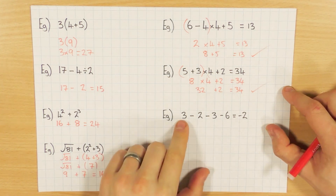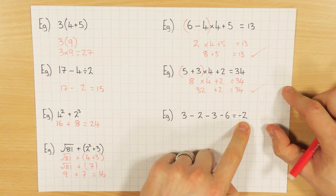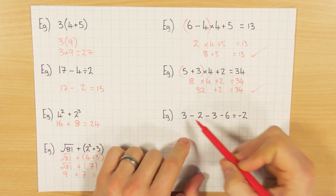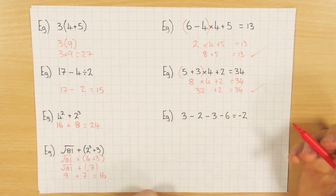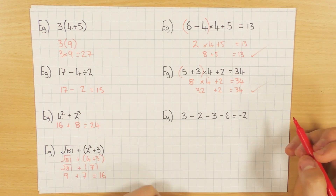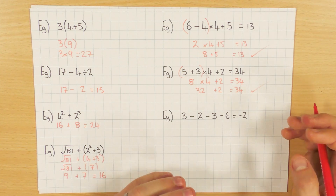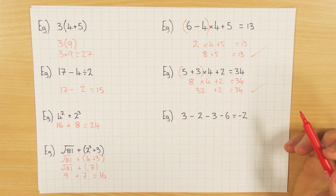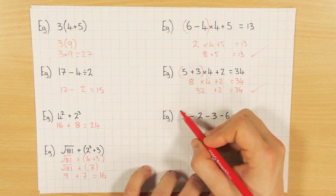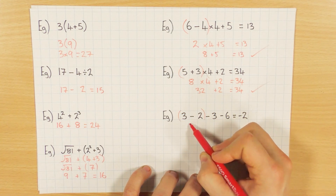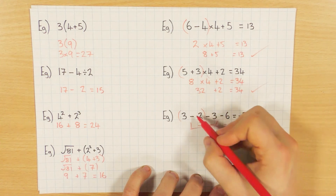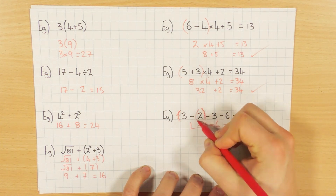The next one: 3 minus 2 minus 3 minus 6, answer needs to be minus 2. Trying brackets at the front: 3 minus 2 is 1, then 1 minus 3 minus 6 gives minus 2 minus 6 — that doesn't work. Trying brackets in the middle: 2 minus 3 gives minus 1, then 3 minus minus 1 — taking away a negative turns into a positive — so 3 plus 1 is 4, minus 6 gives minus 2. That works, so the brackets go around the middle.